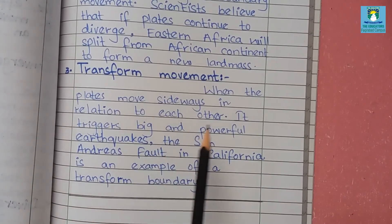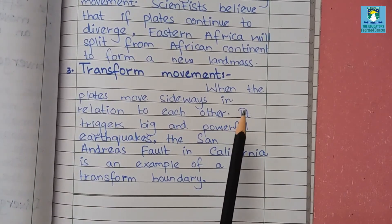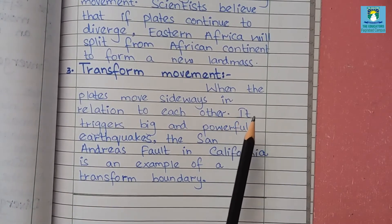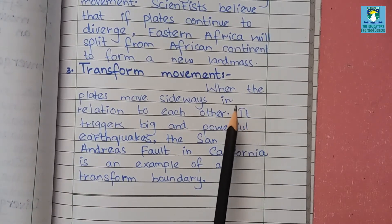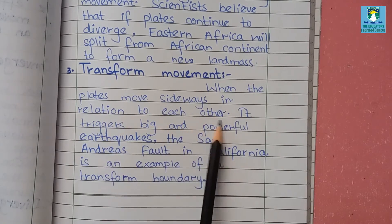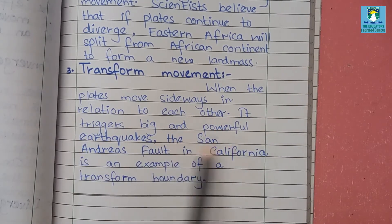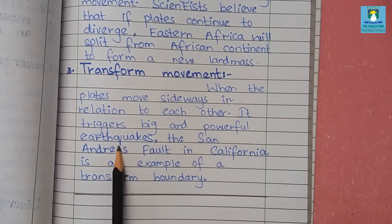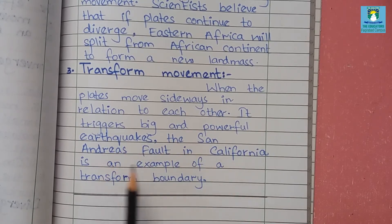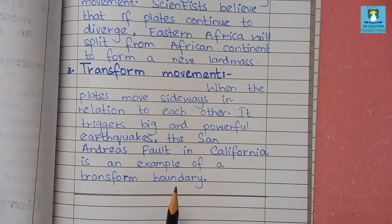The third type is transform movement. When the plates move sideways in relation to each other, it triggers big and powerful earthquakes. The San Andreas Fault in California is an example of a transform boundary.